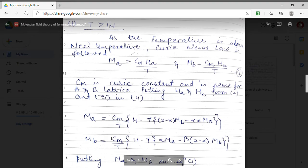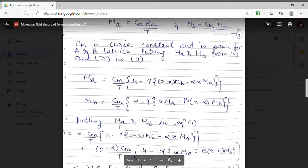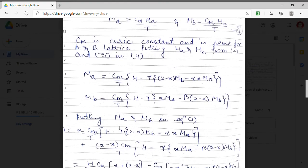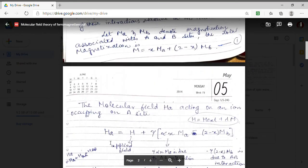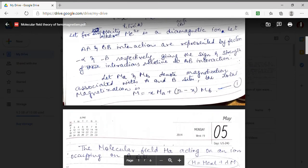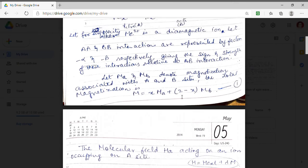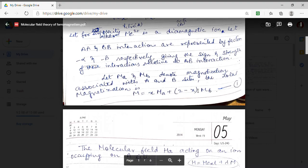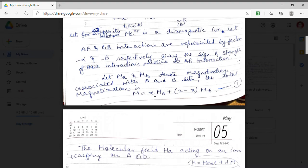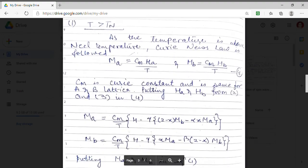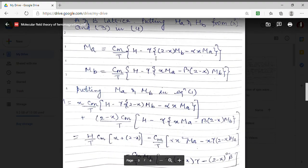We can find the value of MA and MB. Now we have to find out the total magnetization. The total magnetization is X MA plus 2 minus X MB. We have already determined the value of MA and MB. So we can find the value of MA and MB. This is the value of MA.